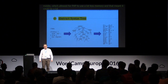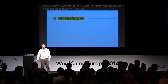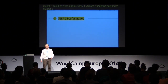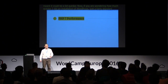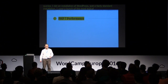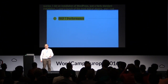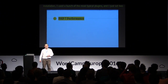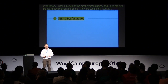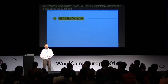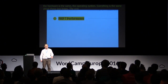If you're wondering how much quicker: I did an installation of WordPress, just a fairly standard installation, with a bunch of the most typical plugins — Yoast, contact forms, that kind of thing. I set two standard development boxes up. They're completely identical — the hardware, the operating system, everything is the same. The only difference is one's using PHP 5.6 and the other is on PHP 7.